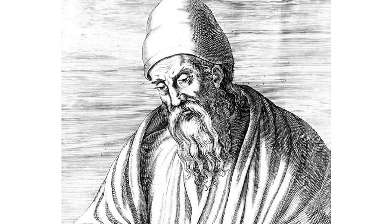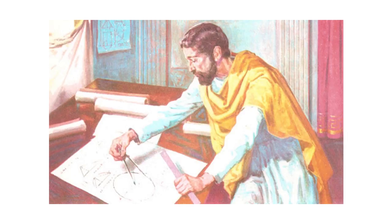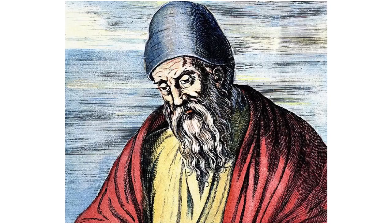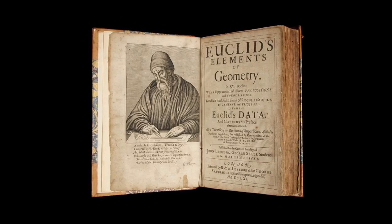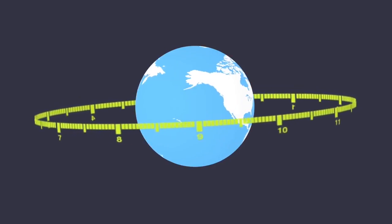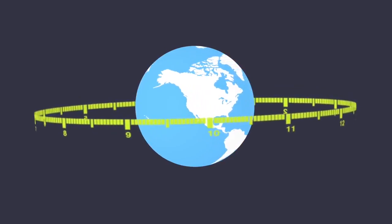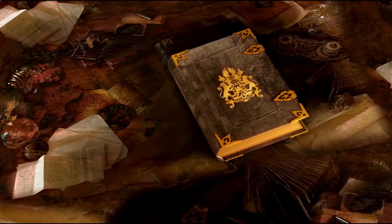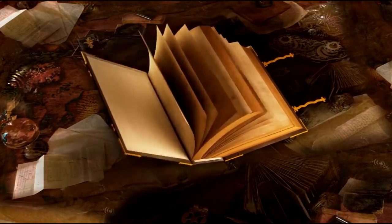Around 325 BC, Euclid, a teacher of mathematics at Alexandria in Egypt, collected all the known work and arranged it in his famous treatise called Elements. He divided the Elements into 13 chapters, each called a book. These books influenced the whole world's understanding of geometry for generations to come.